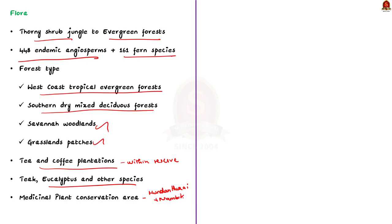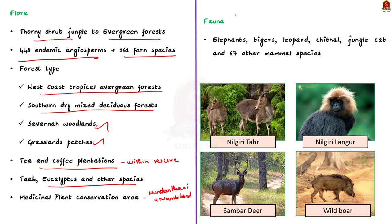Coming to the faunal diversity of the reserve, around 84 threatened species have been reported. The reserve has elephants, tigers, co-predators like leopard, ungulates like sambar and spotted deer. There are also birds, reptiles like crocodile, and fish species. Other animals include Nilgiri tahr, Nilgiri langur, wild boar, chital, jungle cat, and 67 other mammal species. The birds that freely fly around the reserve include the great Indian hornbill, gray-headed bulbul, oriental bay owl, great pied hornbill, and broad-tailed grassbird, among others. That's all regarding Kalakad Mundanthurai Tiger Reserve.